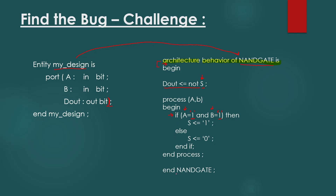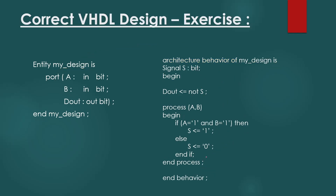Last is the end architecture where we used 'NAND gate' as the architecture name, but the architecture name is 'behavior' here. So we need to write 'behavior.' This is the correct VHDL code for our requirement of a NAND gate. You can write your VHDL code in different ways and using different functions, and this is just one way, taken as an example only.